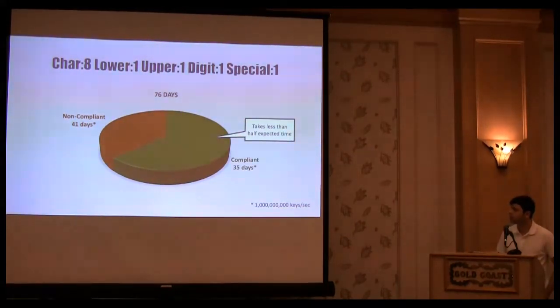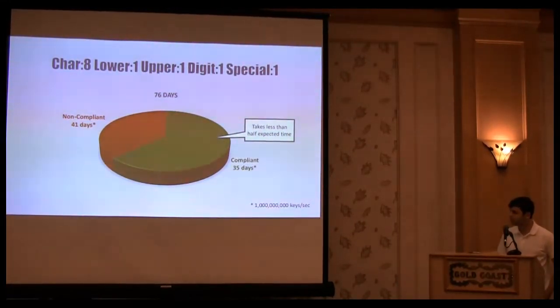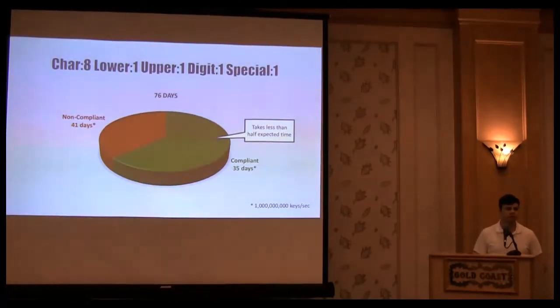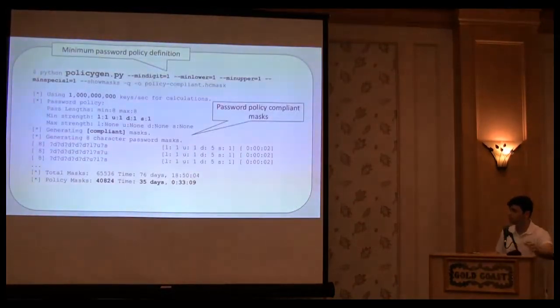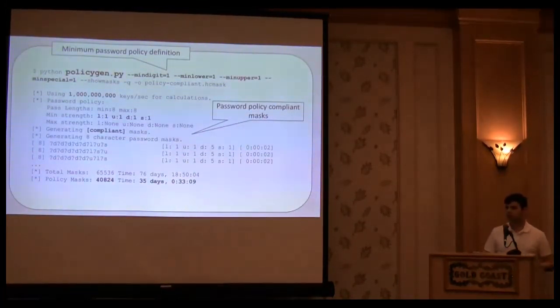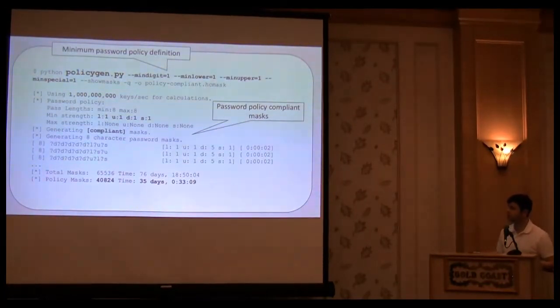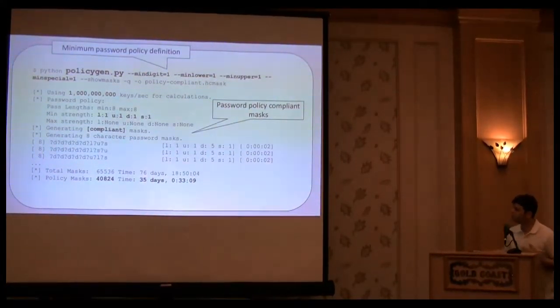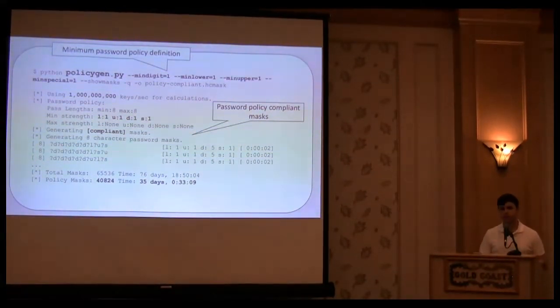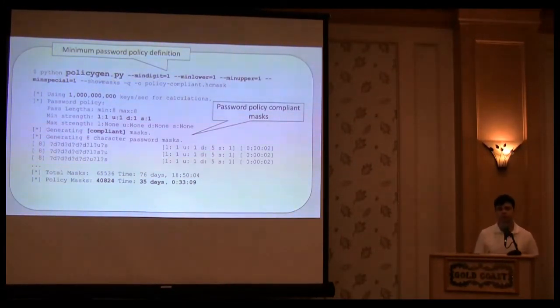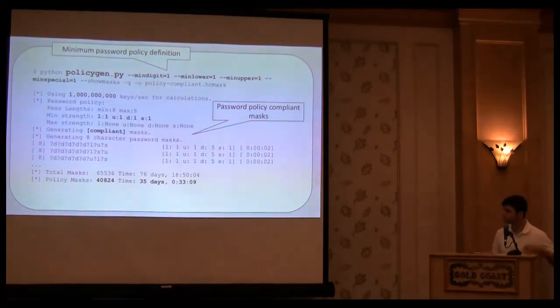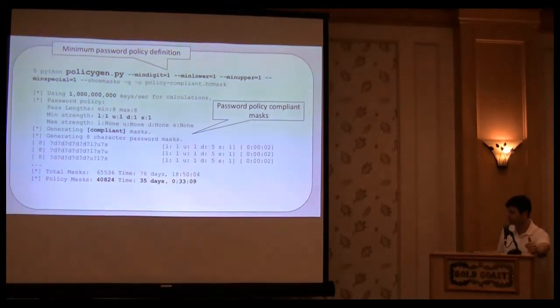It takes a lot less time, actually, to use this larger coverage, because compliant passwords don't have really expensive masks, like all special characters, which take forever to run. Basically, I wrote a tool called PolicyGen, which provided with a password policy, so minimum digits, and so on, it will generate a collection of password-compliant policy masks, which you can plug into OCL Hashcat, and you will attack just the passwords which have some potential to be in the set.